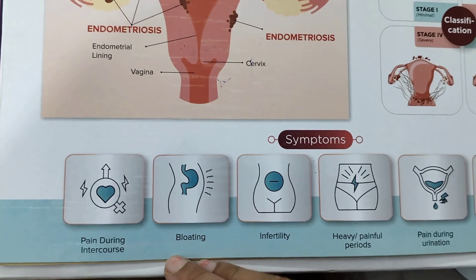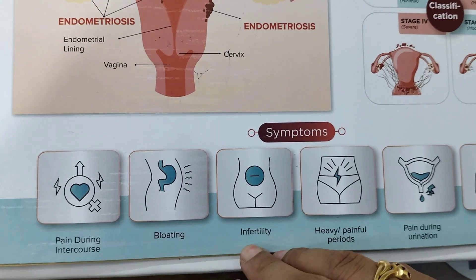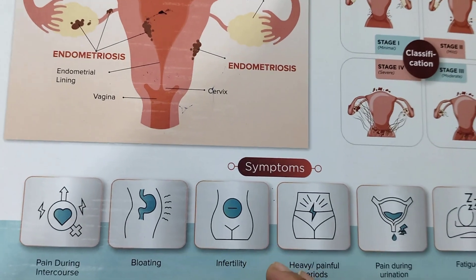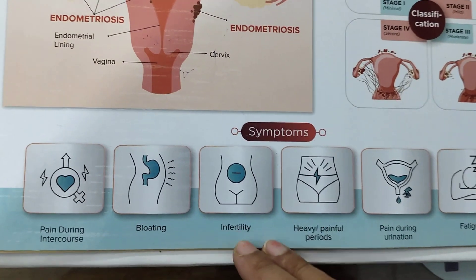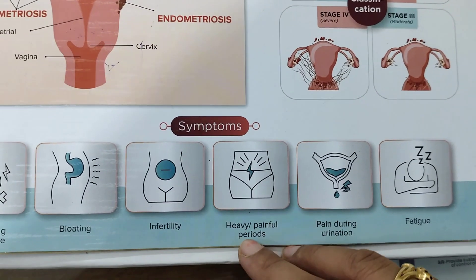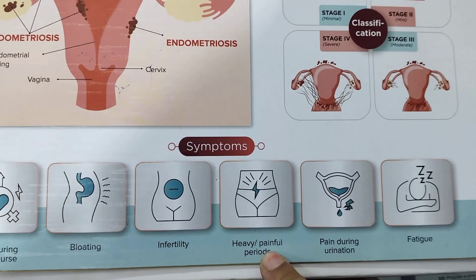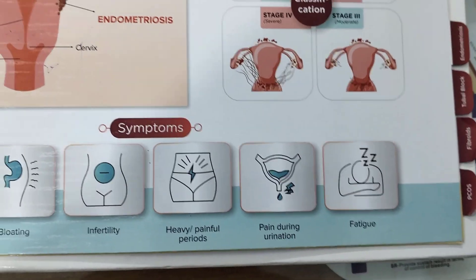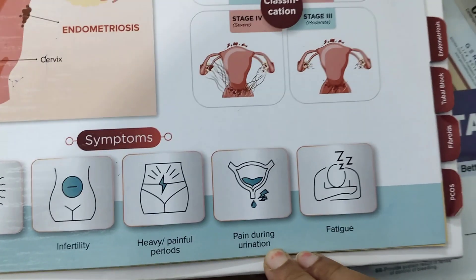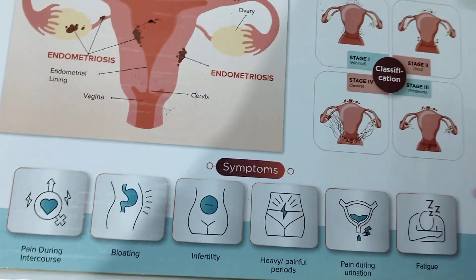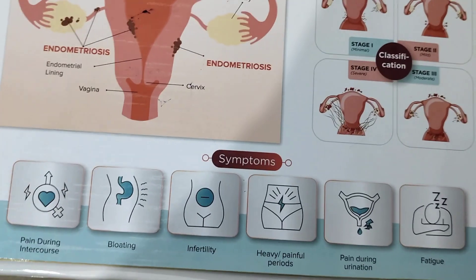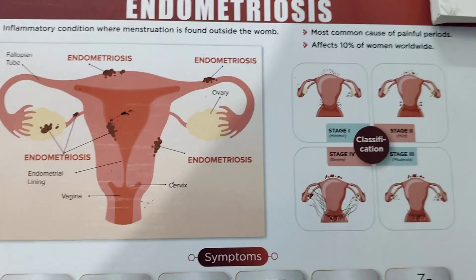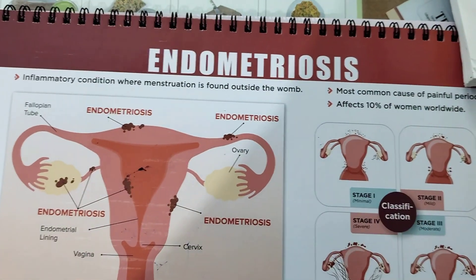Other symptoms include bloating and infertility. Many infertile patients are diagnosed with endometriosis only when they seek help for infertility — they had severe pain but never took it seriously, and when they were unable to conceive, endometriosis was found. Heavy and painful periods are also a very common symptom. Pain during urination, and sometimes bleeding and pain during passing motions, can also occur, though these are rare. A very vague symptom is fatigue. If you have any of these symptoms — painful periods, pain during intercourse, pain during urination or motion, or infertility — it is always advisable to see a doctor and rule out endometriosis.